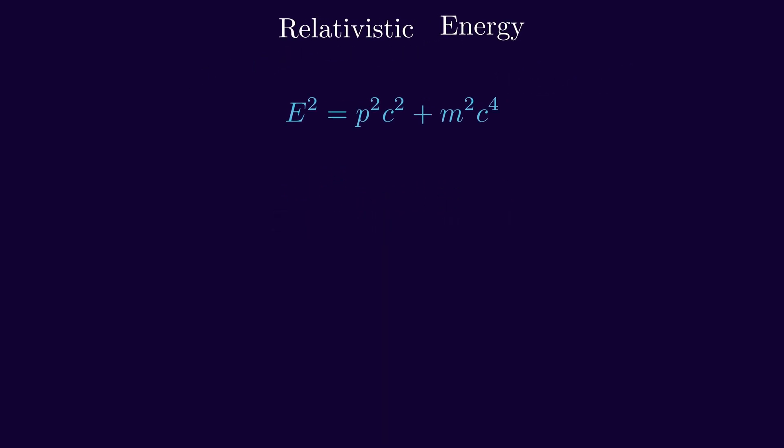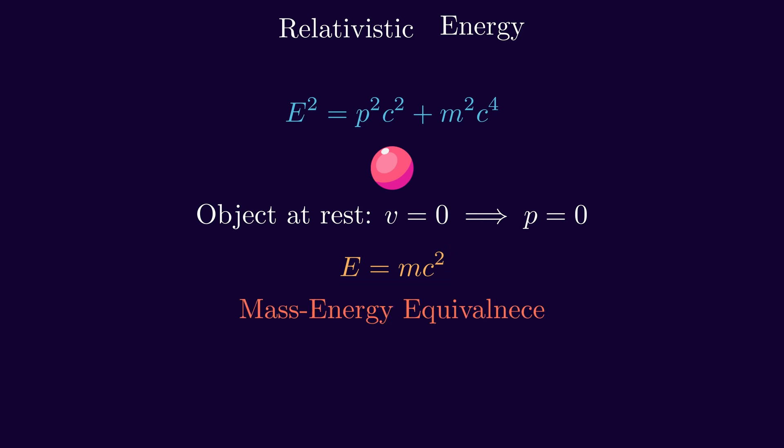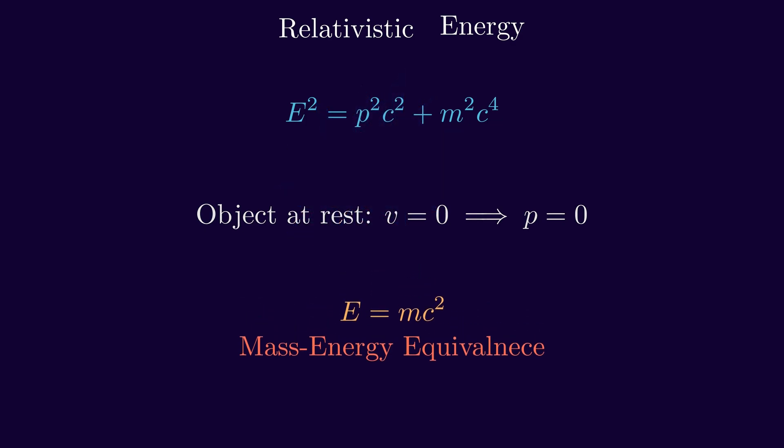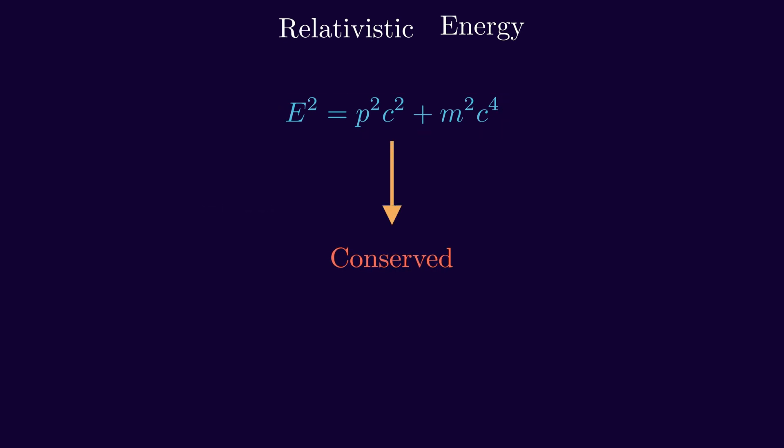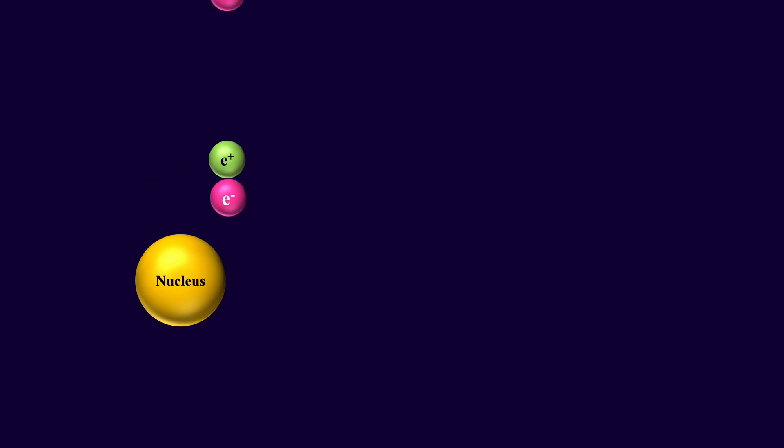The energy equation also reveals that an object possesses a non-zero positive energy even when at rest. This intrinsic energy is termed rest energy and it shows that mass is nothing but a form of energy. Consequently, the conservation of mass principle in Newtonian physics is replaced by the conservation of total relativistic energy in relativity. Considering the interchangeable nature of mass and energy, and given that photons are quanta of energy, it is unsurprising that they too carry momentum.